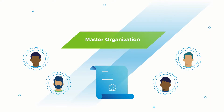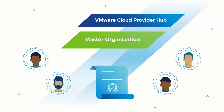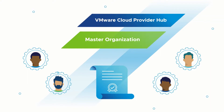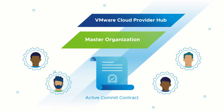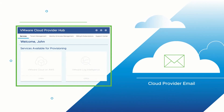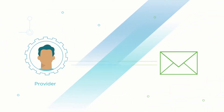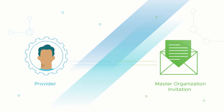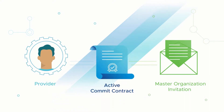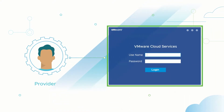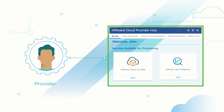Master org, also called provider org in VMware Cloud Provider Hub, is a root-level org created for every service provider with the first active commit contract. There can be only one master org with every cloud provider email. The provider who received the master org invitation when the commit contract becomes active in Business Portal is the only one who can log in and create master org.